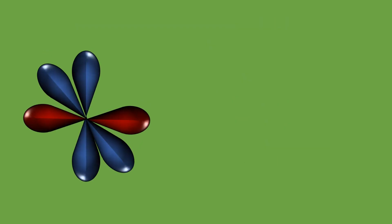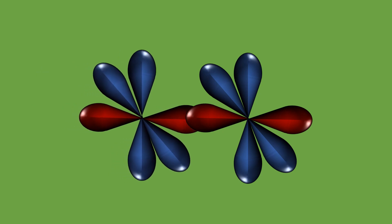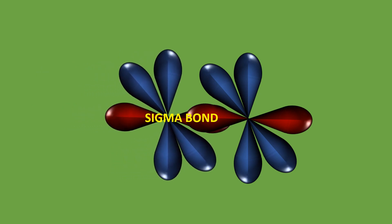Px orbital of one nitrogen atom overlap with Px orbital of another nitrogen atom to form sigma bond along the internucleus axis.